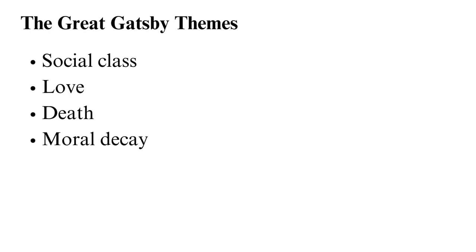The dominant themes in The Great Gatsby include social class and love. Practically all aspects of the book revolve around class inequality — Gatsby keeps his humble past a secret, Daisy did not marry Gatsby because he did not belong to the upper class, and the book focuses on the affluent side of West Egg. Love is also all over the book; the entire plot revolves around Gatsby's unanswered love for Daisy, and there are a number of affairs and romantic relationships that bring about significant developments.